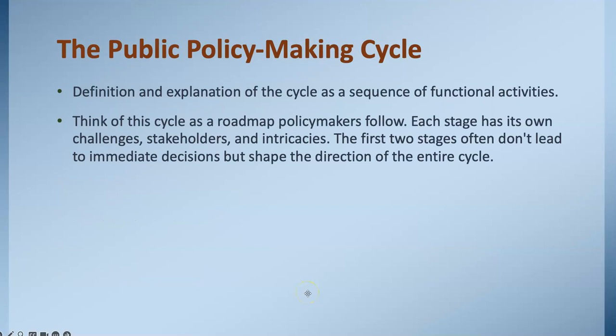Let's begin by talking about the public policymaking cycle. This is a sequence of functional activities — a journey from recognizing social issues to acting upon them. Every stage has distinct characteristics and requirements. While the initial stages don't always culminate in definitive decisions, they do determine which issues receive attention and which are sidelined. Think of this cycle as a roadmap that policymakers follow. Each stage has its own challenges, stakeholders, and intricacies. The first two stages often don't lead to immediate decisions, but can shape the direction of the entire cycle.